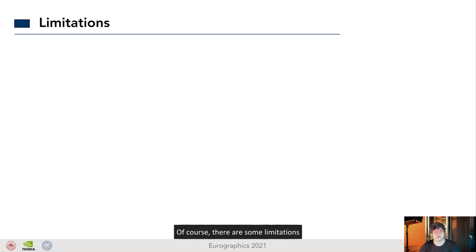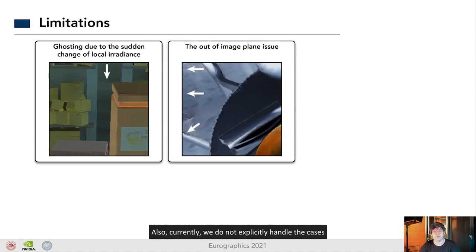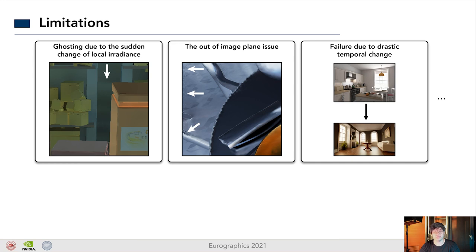Of course, there are some limitations. For example, when filtering the occlusions, sometimes our method will still introduce faintly visible ghosting, due to the intensely varied incident radiance in the local area. Also, currently we do not explicitly handle the case where the motion vectors pull into regions outside the image plane. Moreover, when the temporal change is too drastic, there is barely any temporal information that we can use. One typical case is the sudden switch of scenes.